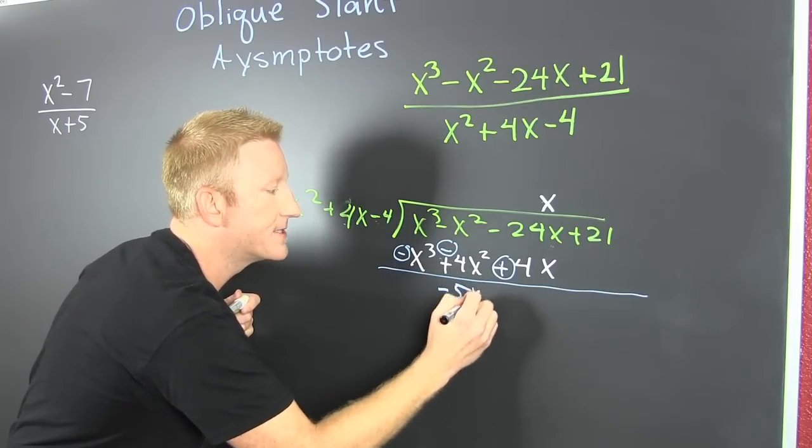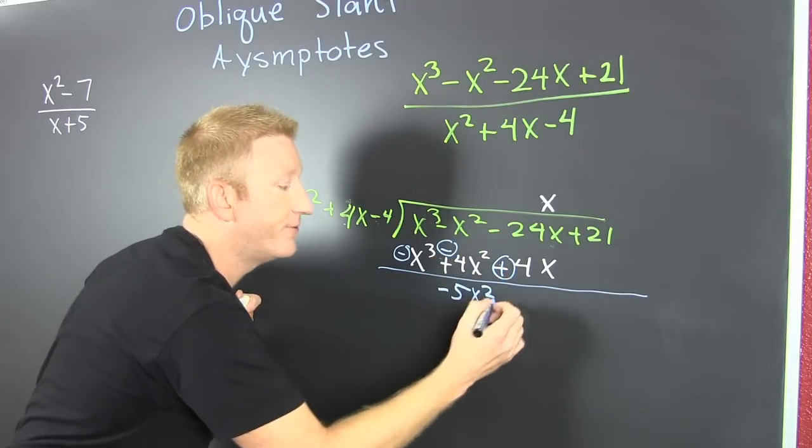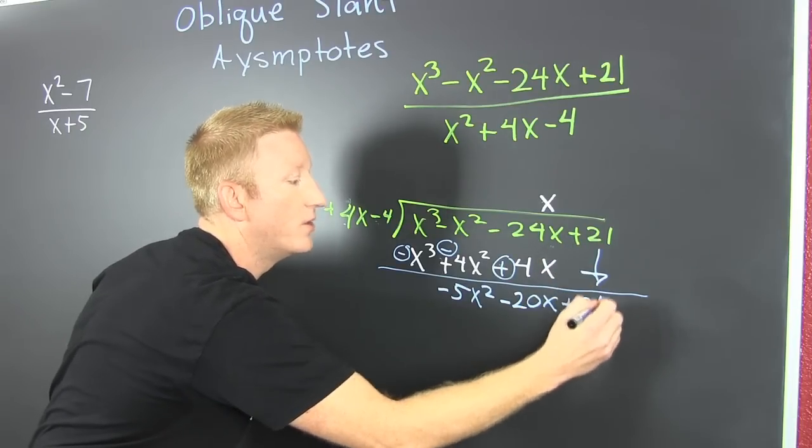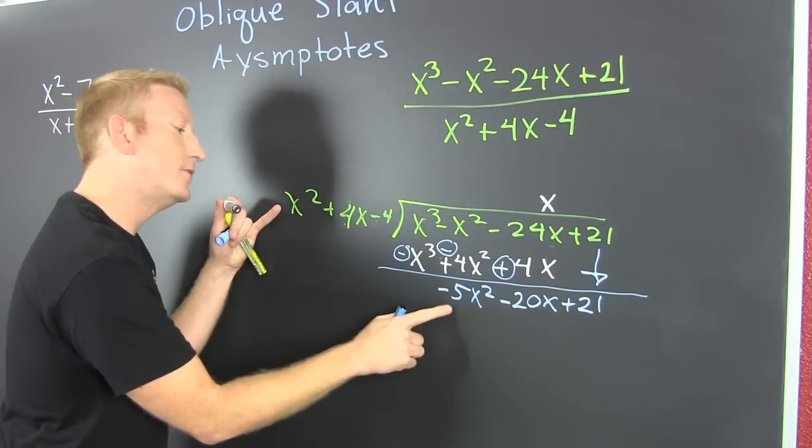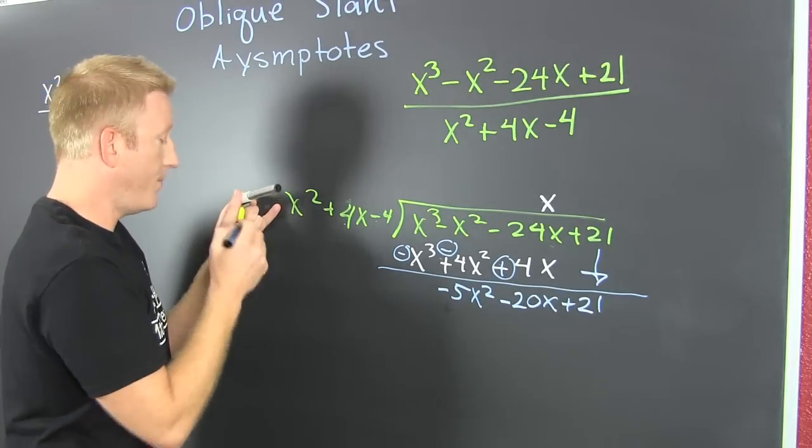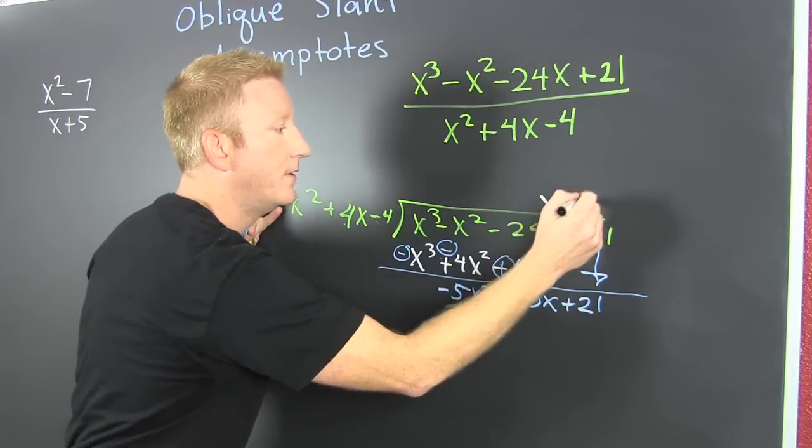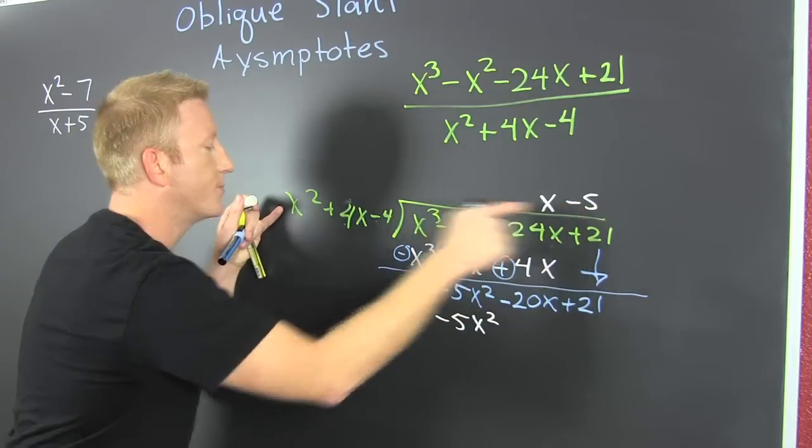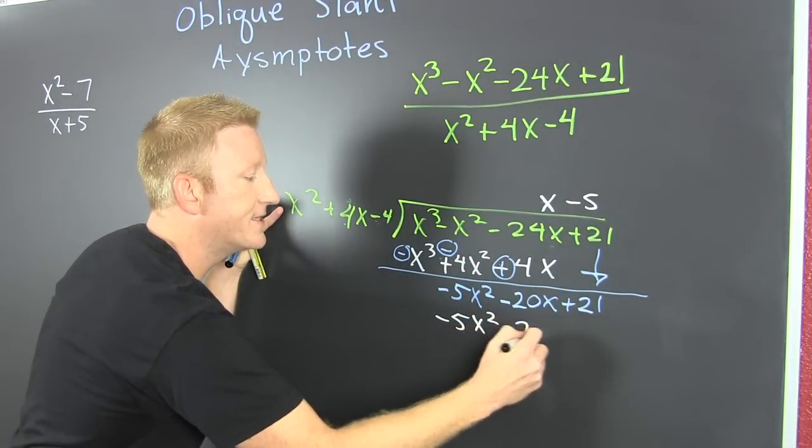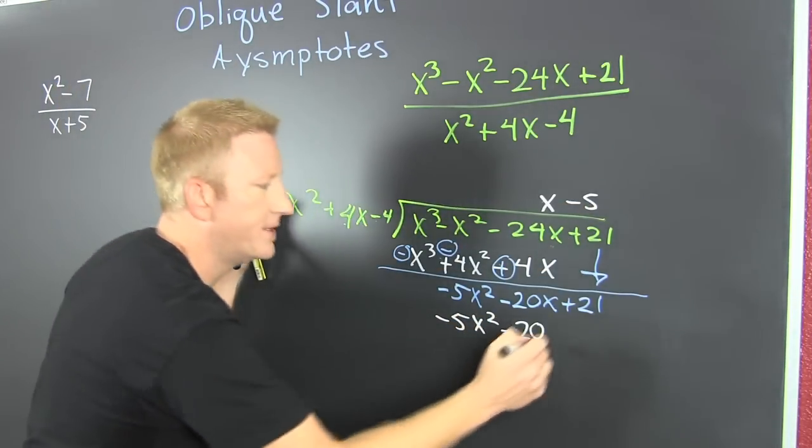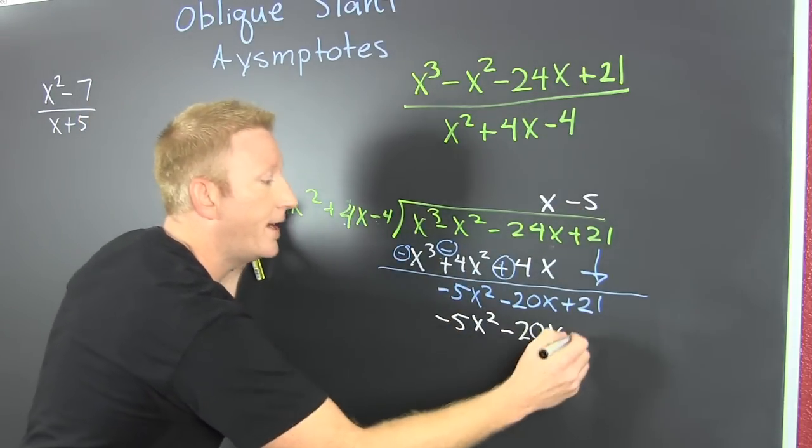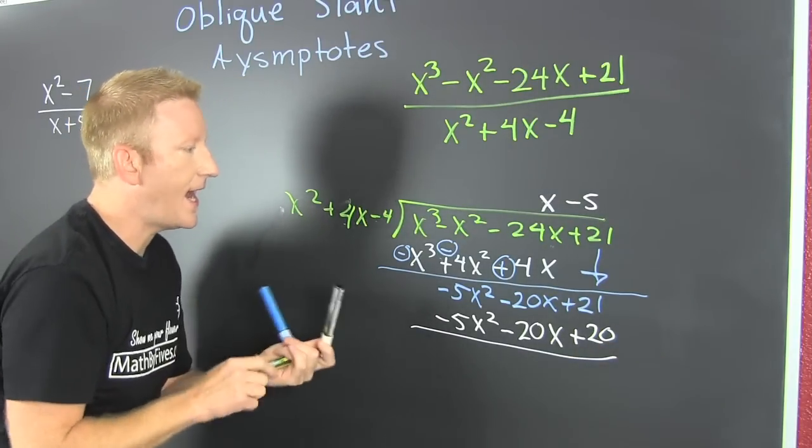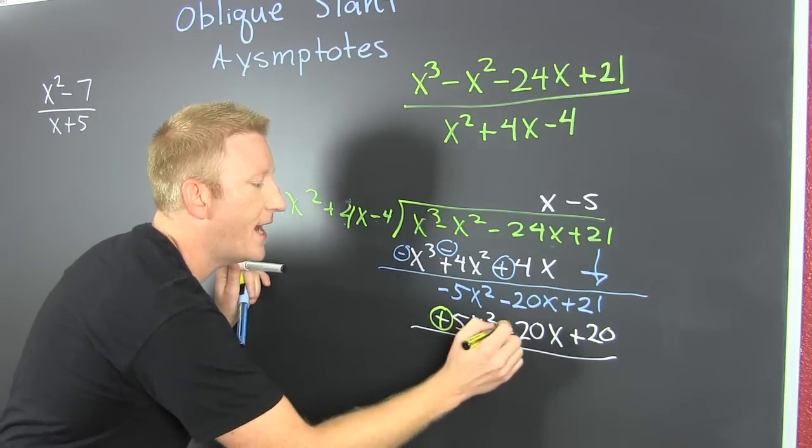bring it on down plus 21. What am I gonna multiply this guy by to get minus 5x²? Minus 5. So then I take this one times that one and put it there, minus 5x². This one times that, put it there, minus 20x. And then this one times that one, put it there, plus 20. Then I change the signs, I like to circle it, lets me know I've changed it, and add down. Nothing, nothing, and one. So then what do I do? I put remainder over divisor, and